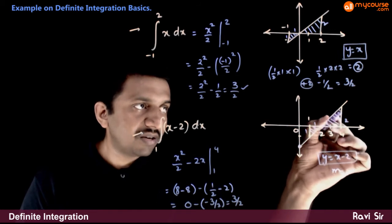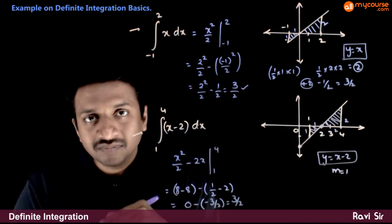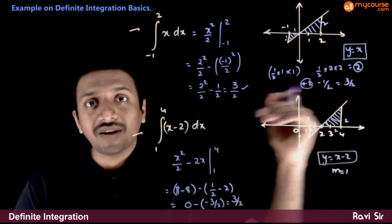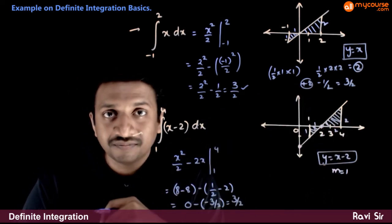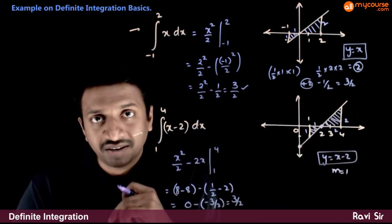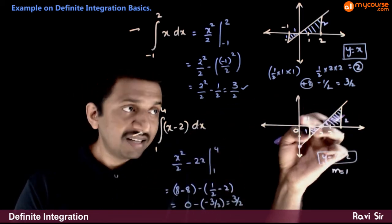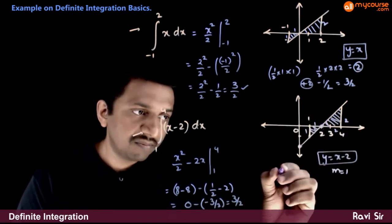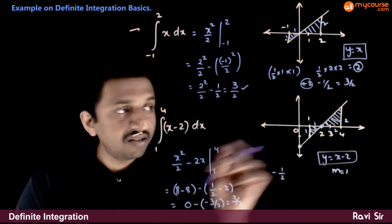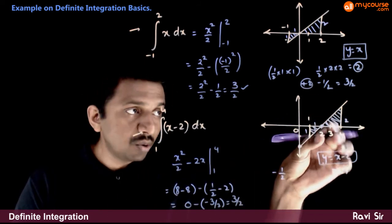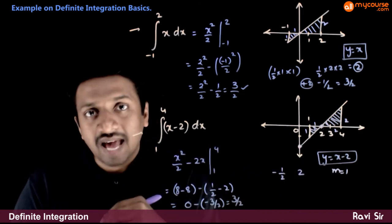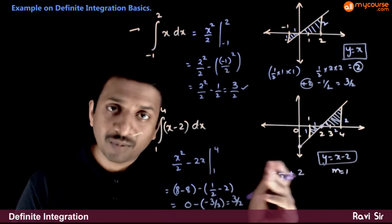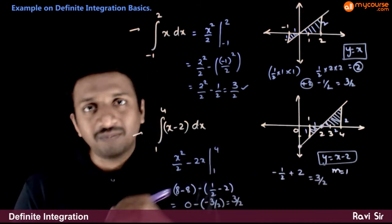This is the region we are talking about. The area below the x-axis is negative, and the area above the x-axis is positive. The negative area is half into 1 into 1, which is half a unit with a negative sign. The area above the x-axis is 2 into 2 into half, which gives 2 units as a positive area. The algebraic sum of these two is equal to 3 by 2 again.